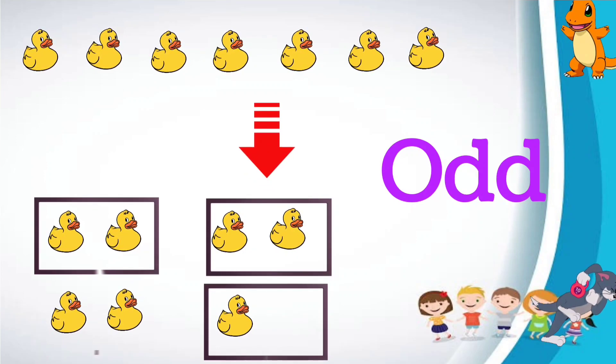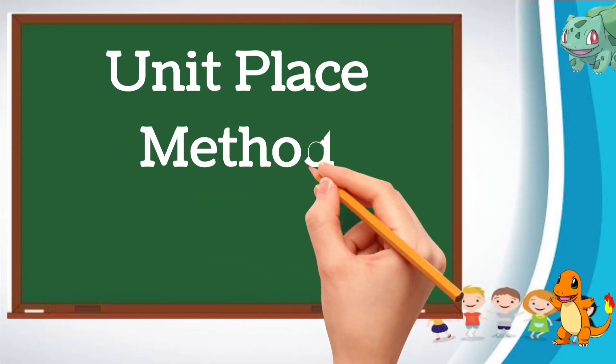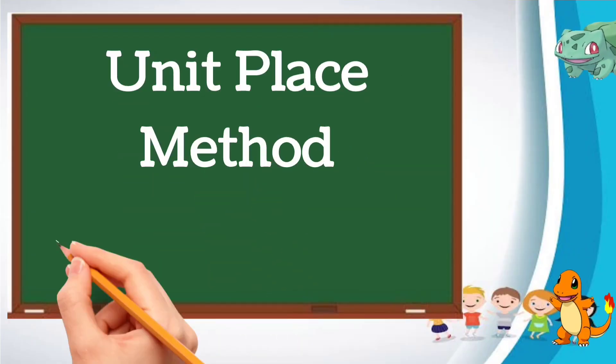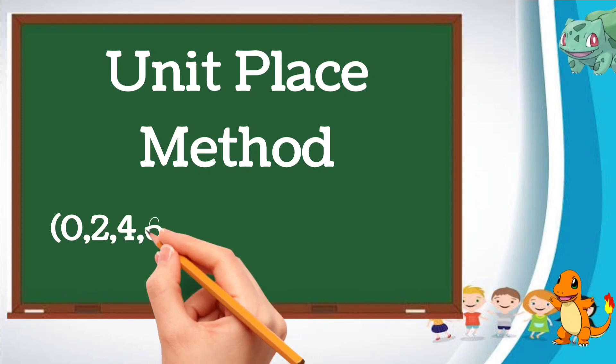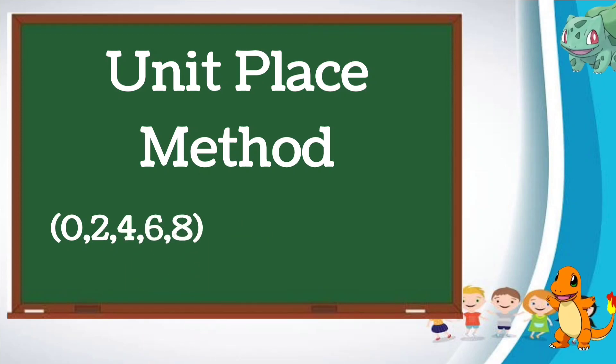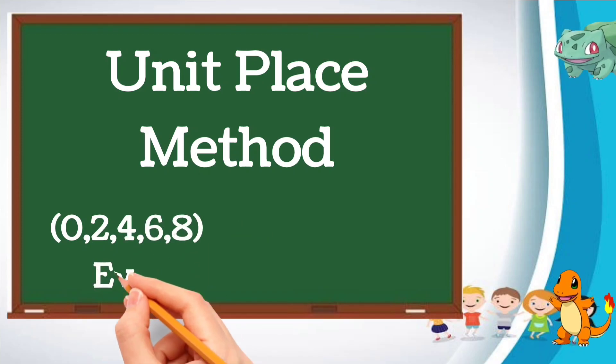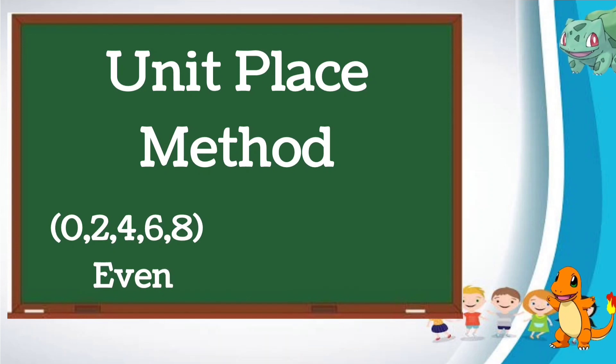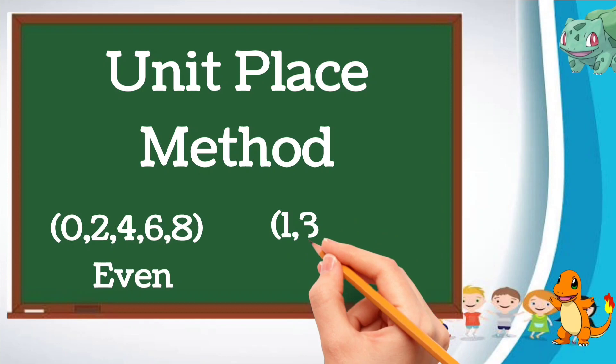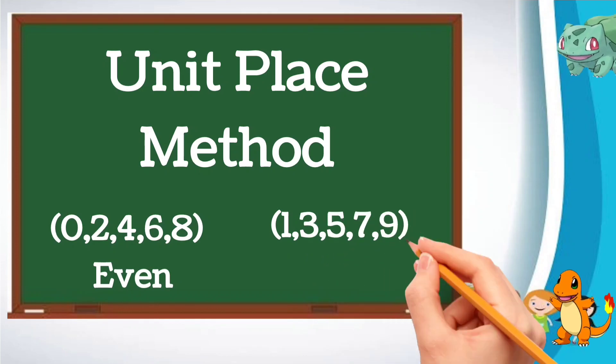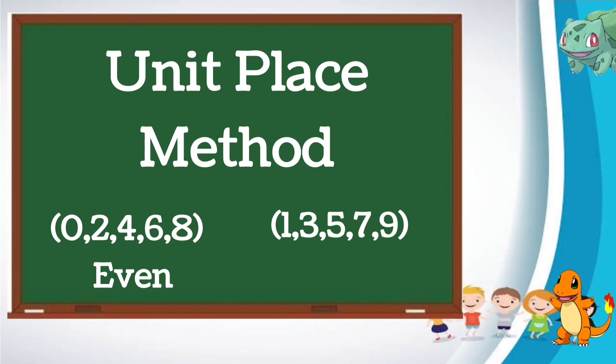Now let us study one more method. That is unit place method. Any number ending with zero, two, four, six, eight is even number. Any number ending with one, three, five, seven, nine is odd number.